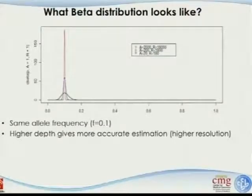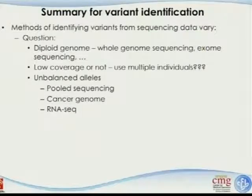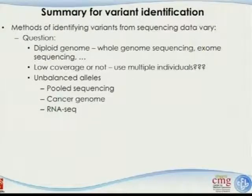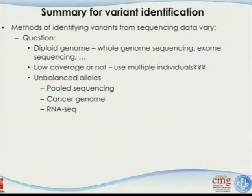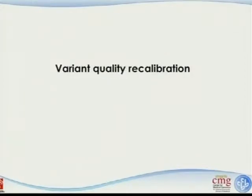Summary for variant identification: methods of identifying variants from sequencing data vary widely depending on the question. For diploid whole-genome or exome sequencing, use the standard Bayesian approach. For low coverage, use multi-individual calling. For unbalanced data (cancer, pooled, RNA-seq), use specialized approaches such as those listed.